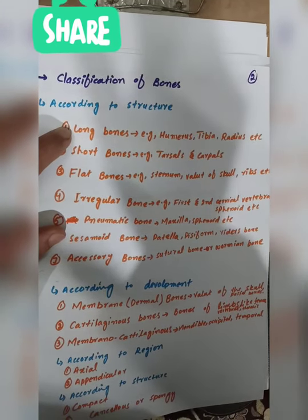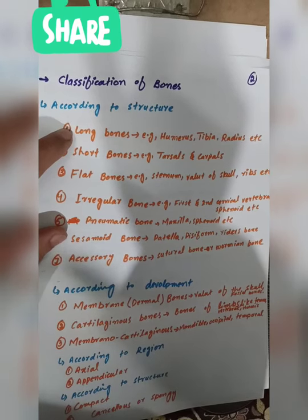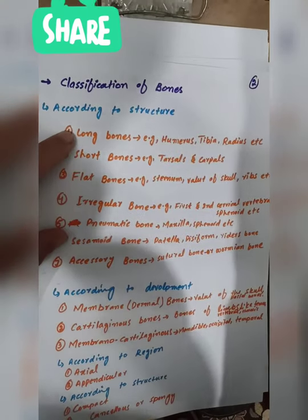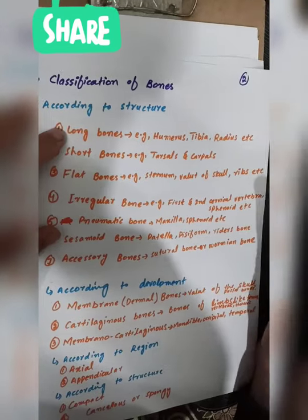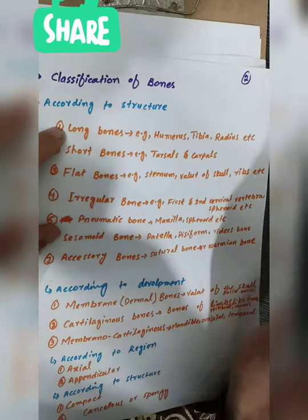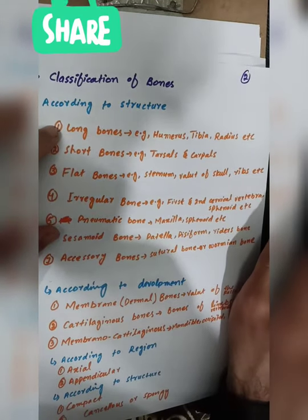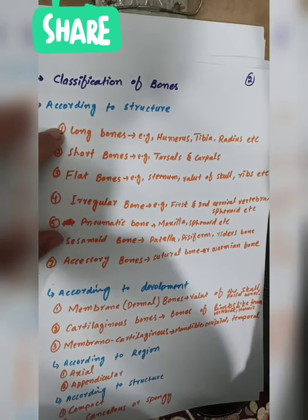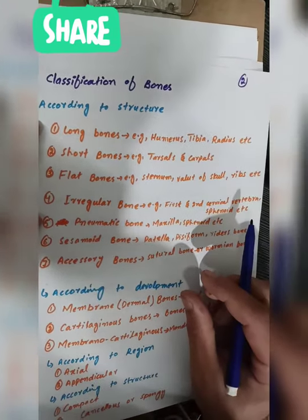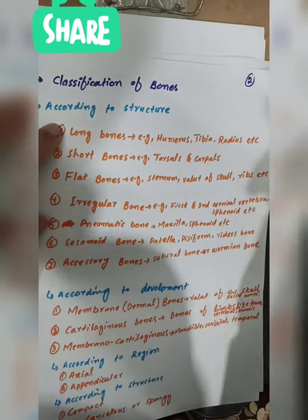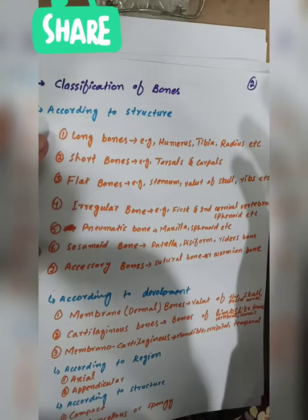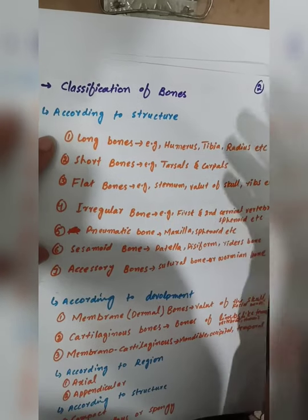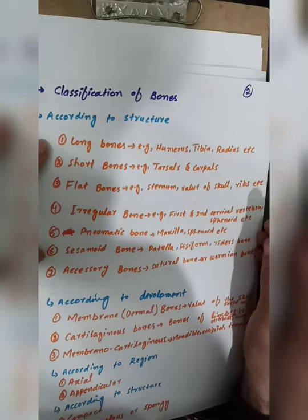Long bones have diaphysis and epiphyses. Long bones are elongated in shape. Examples of long bones include the humerus, tibia, radius, and femur bone.